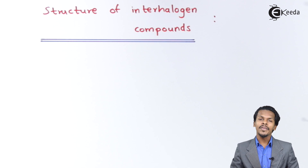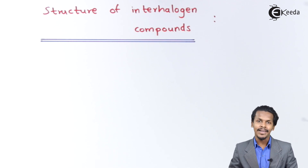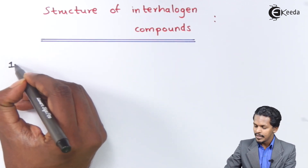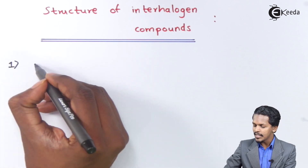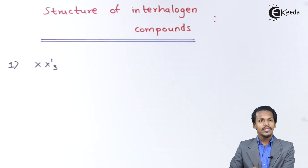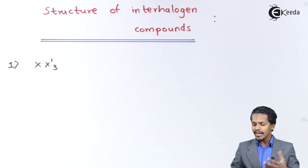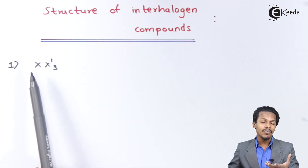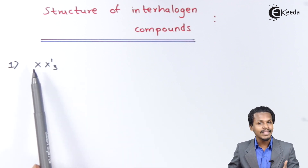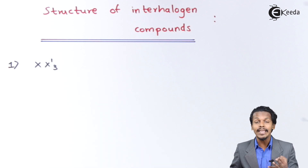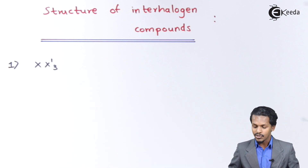In this topic we are going to talk about the structure of interhalogen compounds. Starting with the first one: suppose we are discussing about XX₃. In this case the central atom is X, and the three X' groups are attached to this X.